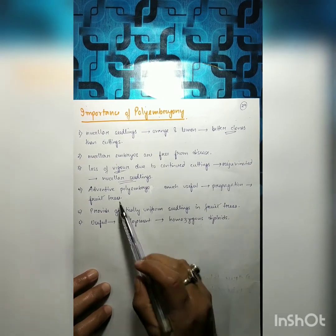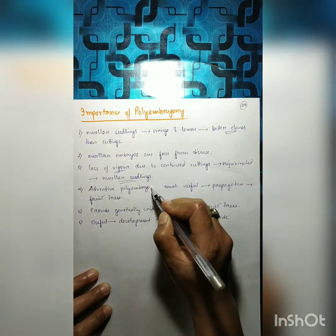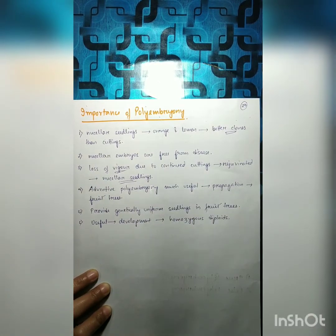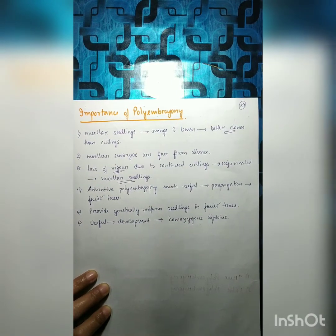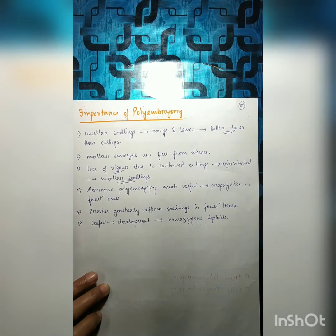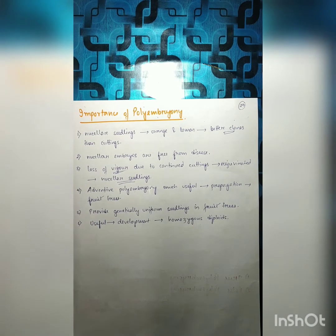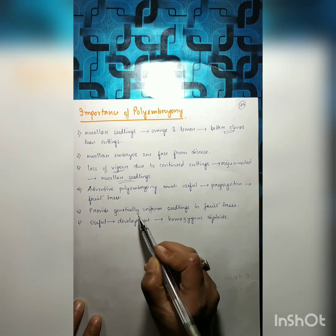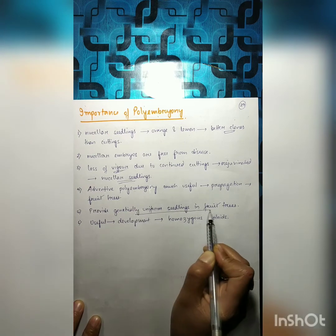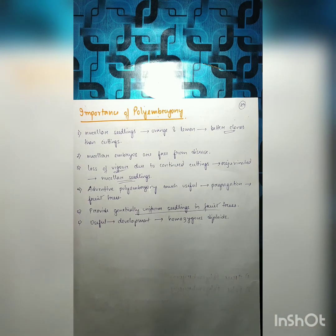Adventive polyembryony is much useful for propagation in fruit trees. It provides genetically uniform seedlings in fruit trees, which is very very useful.